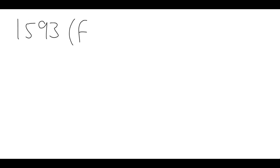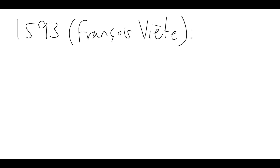In this video, we're going to be talking about a formula for pi found by François Viète in 1593. This is actually the first example of an infinite process used to obtain pi in European mathematics. Madhava had his arctangent formula and other trig formulas a few hundred years earlier, but this is really the start of a wave of European formulas for pi.